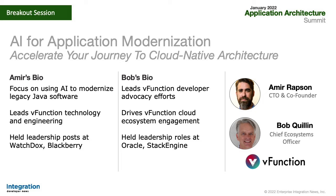Their session this morning is AI for Application Modernization. If you're among the growing number of today's largest enterprises looking to make their legacy on-prem apps ready for the cloud — either through hybrid architecture or native cloud migration — you're in the right place. vFunction leverages AI and proven methodologies to modernize Java applications, including the ability to automatically extract efficient microservices from complex monolithic apps. We have a great slide session and a demo that shows you exactly how that works.